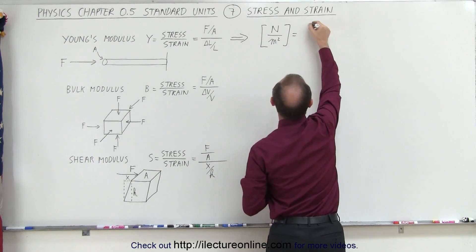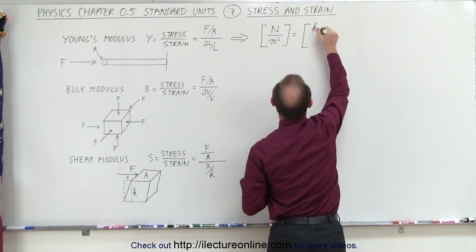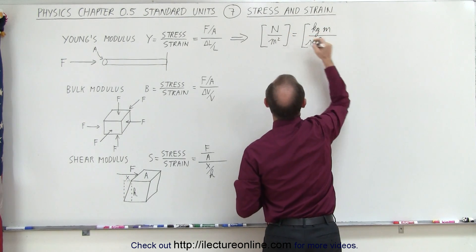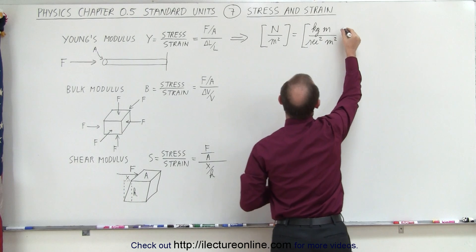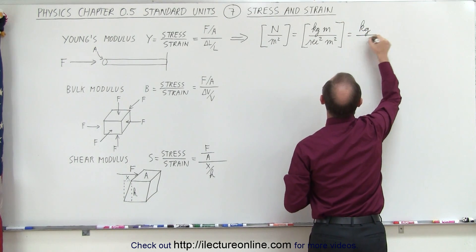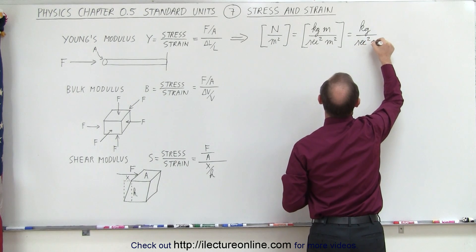And if we then work out the units, we get kilograms meters per second squared for Newtons, and then divide by meters squared. When we simplify that, we get kilograms divided by seconds squared times meters.